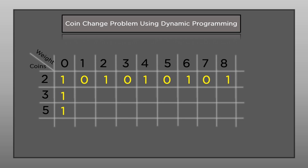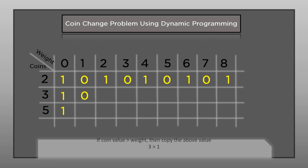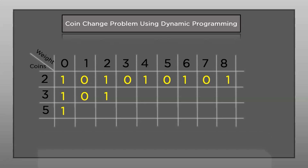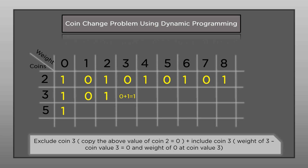Now with coin denomination 3, we use a trick: if the coin value is greater than the sum, simply copy the value from the row above. For example, coin value 3 with sum 1 or sum 2 — we copy the value above. For sum 3, coin value equals the sum, so we apply the three steps: excluding gives us the value above (0); including means subtracting sum 3 minus coin 3 equals 0, and the value at weight 0 in the same row is 1. Adding 0 and 1 gives 1.